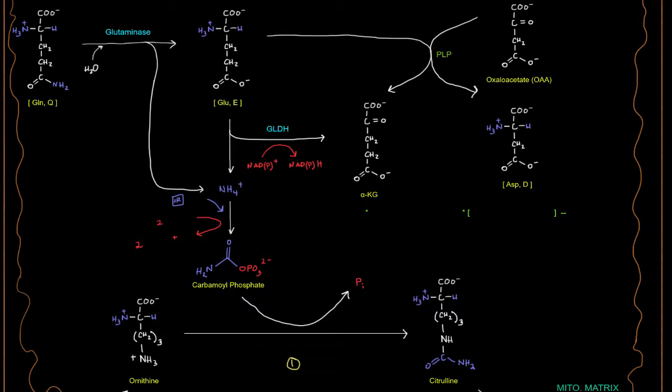Now, not all of that glutamate will undergo the glutamate dehydrogenase reaction. Some of it might undergo and actually will undergo a transamination with oxaloacetate. This is specifically going to be catalyzed by aspartate aminotransferase. And that's because oxaloacetate here is the alpha-keto acid of aspartate. So aspartate will be produced here. And we'll see why that's important in just a moment.